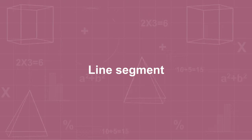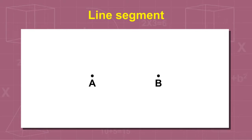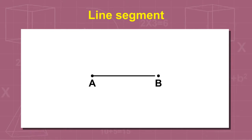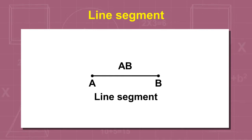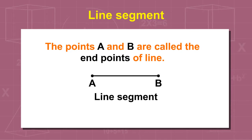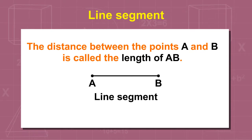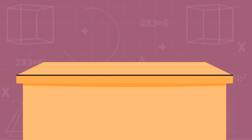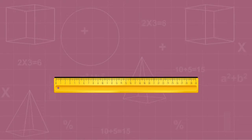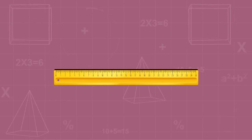Let A and B be two points on a plane paper. The straight path from A to B is called the line segment AB, denoted by AB. The points A and B are called the endpoints of the line. The distance between points A and B is called the length of AB. The edges of a table, edges of a ruler, etc., are examples of line segments.